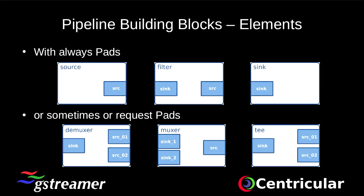Here is what elements in GStreamer might look like. We have a source element that generates some data and has a source pad — it will only output data. In the middle we have a filter that can both receive data and send. At the end we have a sink that only has an input pad and will only receive information. Data always flows from a source in the pipeline to a sink. A chain that doesn't have a sink on the end is considered unlinked and will shut down when the first buffer reaches an unlinked pad.